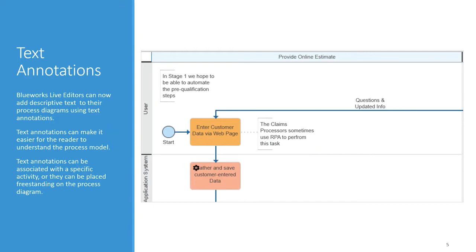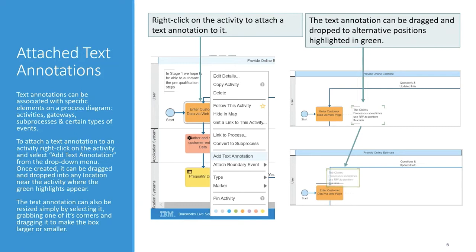So we've added support for text annotations. Text annotations are a BPMN 2.0 mechanism for modelers to provide additional textual information for the reader of a BPMN diagram. The text annotation object can be connected to a specific object on the diagram with an association line, but it doesn't affect the flow of the process. You can see an example of one here attached to the orange 'enter customer data via web page' activity. Text annotation objects can also be placed freestanding on process diagrams — you can see an example of that in the left-hand corner of the diagram. Let's take a quick look at how text annotations work in BlueWorks Live. You can associate text annotations with activities, gateways, subprocesses, and certain types of events. To attach a text annotation to an activity, you just right-click on the activity and select 'Add text annotation' from the dropdown menu.